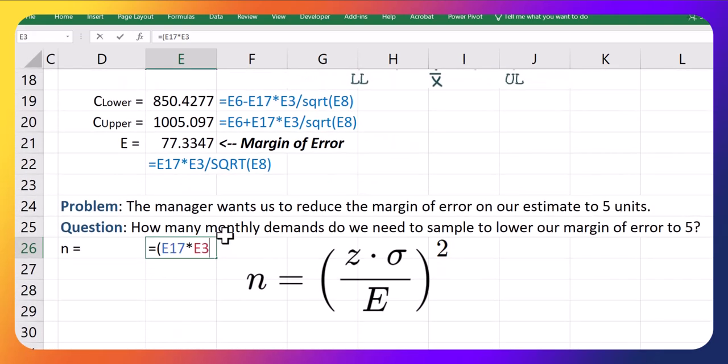And then divide by the desired margin of error. In this case, it is 5. Close that bracket and put it to the power of 2.